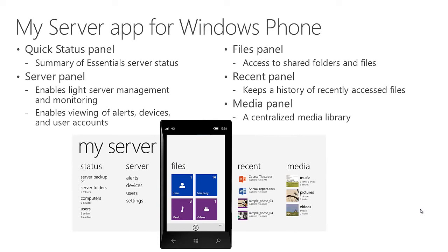There's a similar experience for the Windows Phone app, with some differences in what you can do and how it looks, though many features are quite similar. It offers a quick status panel showing a server status summary, light server management tasks including viewing alerts, devices, and user accounts, and password resets. The files panel gives access to shared folders and files. A recent activities panel tracks things used recently. The Windows Phone app also lets you access streaming media, so if you've installed the optional component, you can remotely stream music or video directly to your phone.